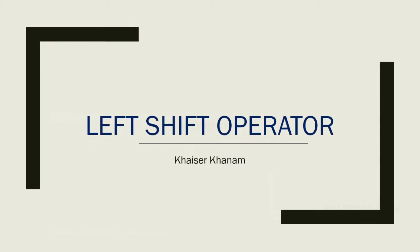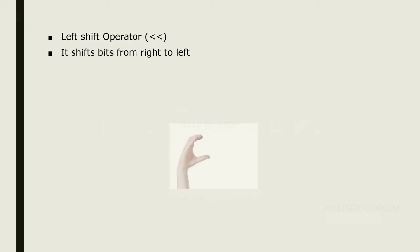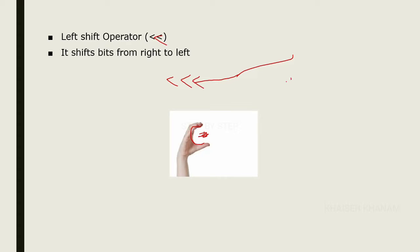Now we are going to learn about the left shift operator, and the trick is the same. When we make the C symbol on our left hand side — whichever direction the mouth of the C is opening — that symbol represents the left shift operator. Here the bits will be moved from right to left.